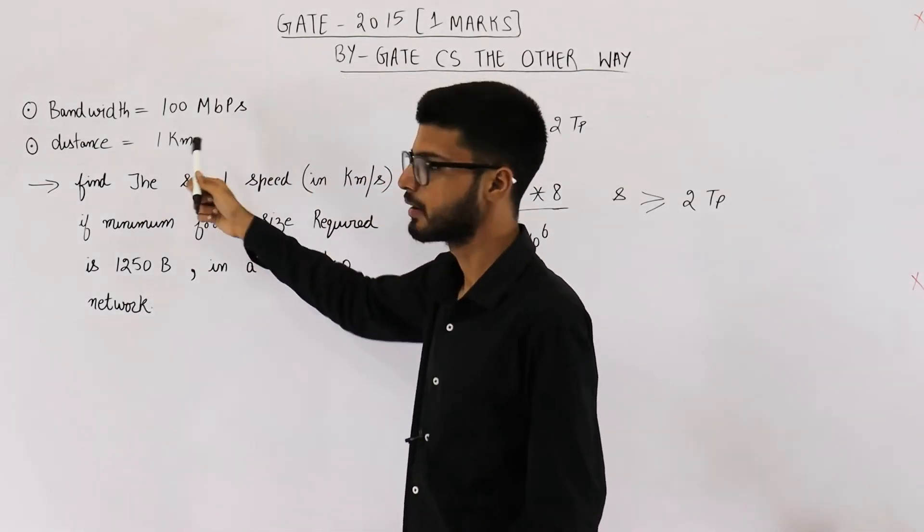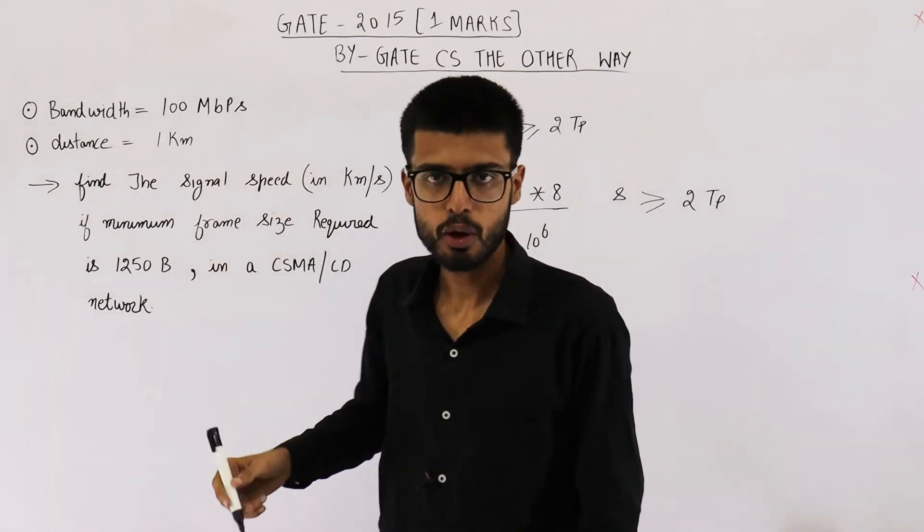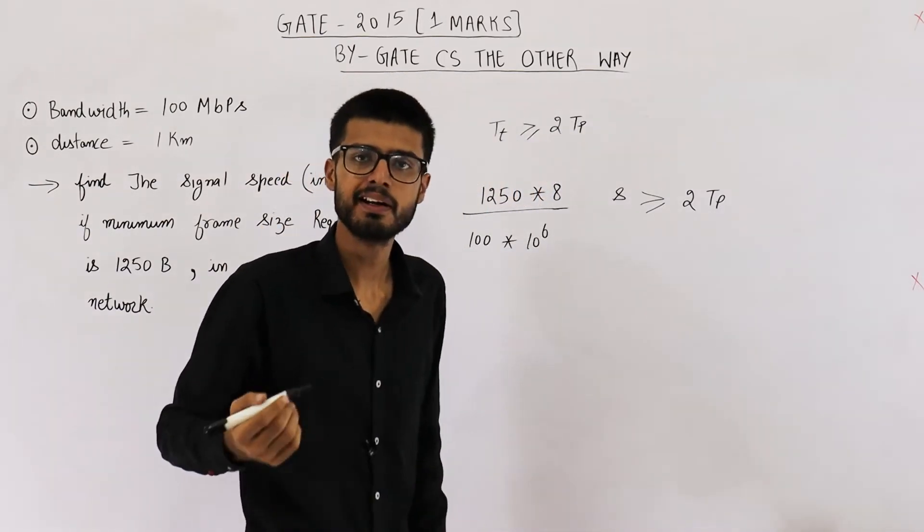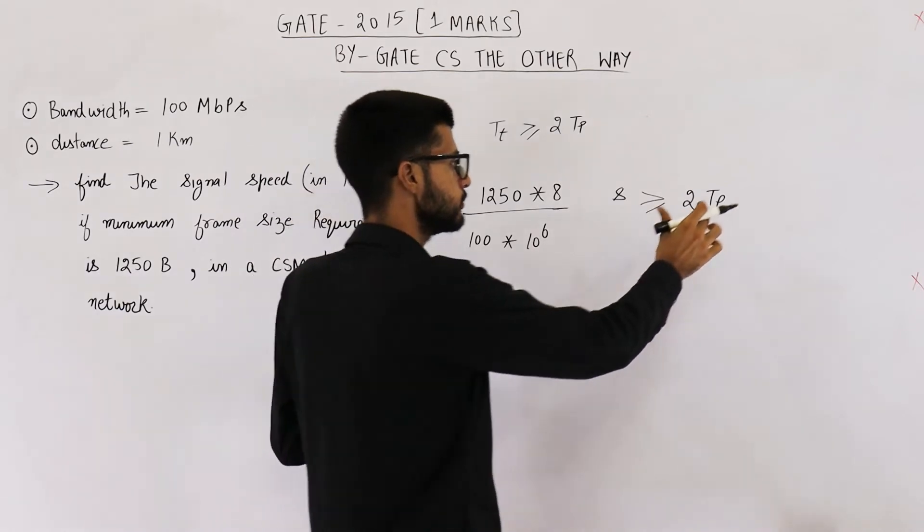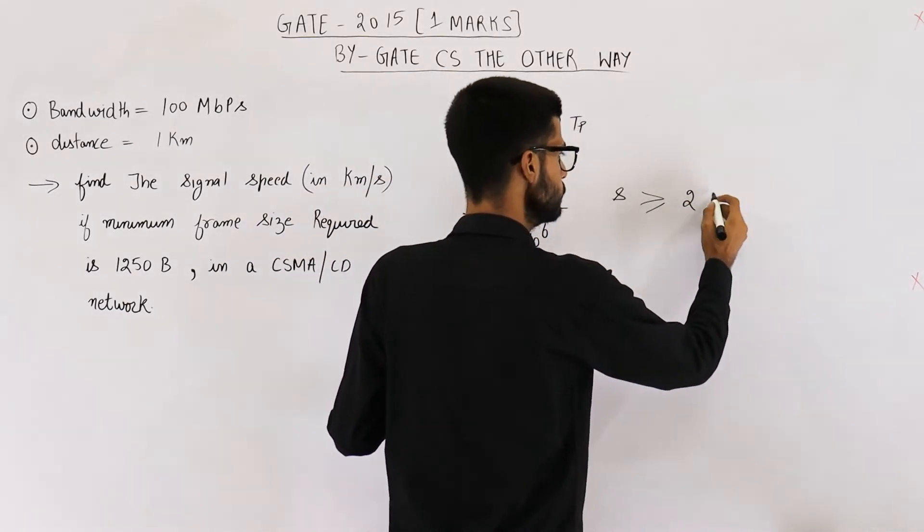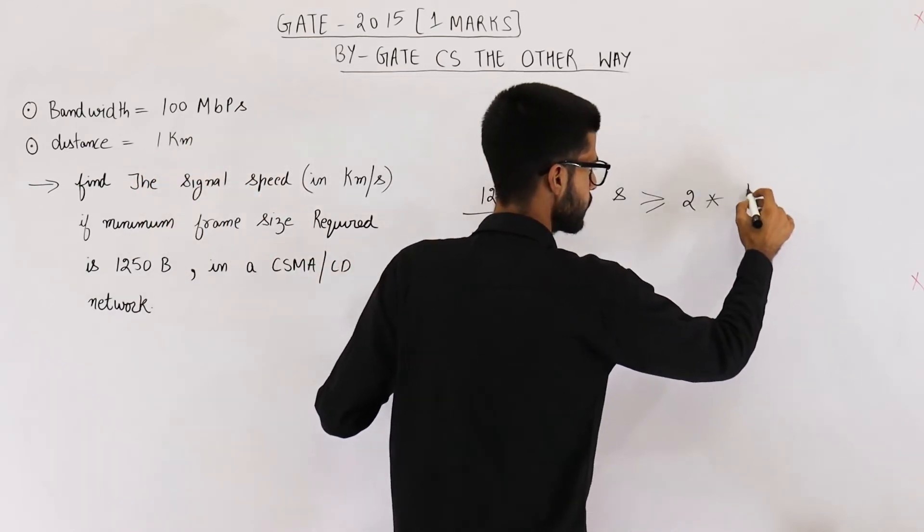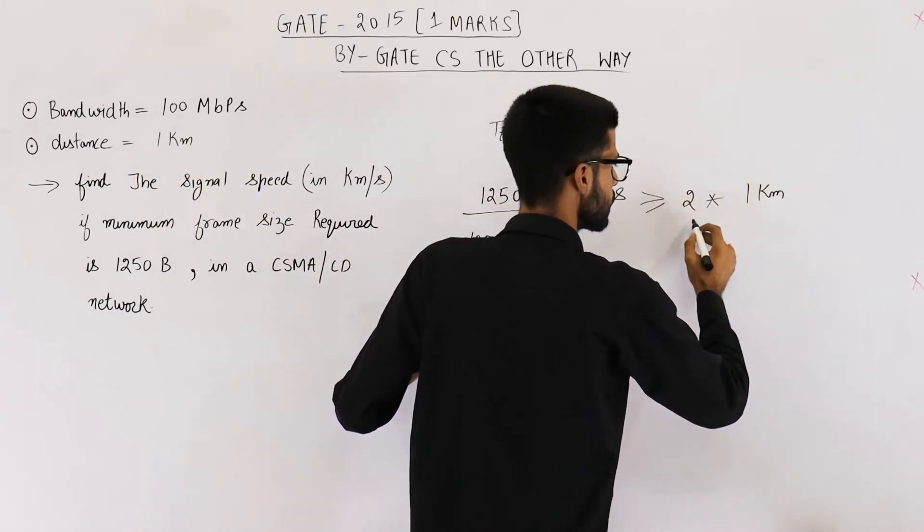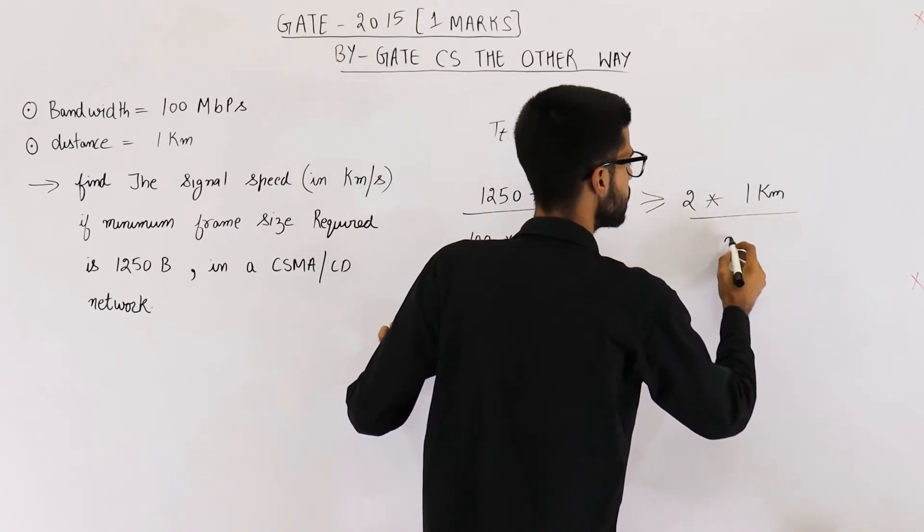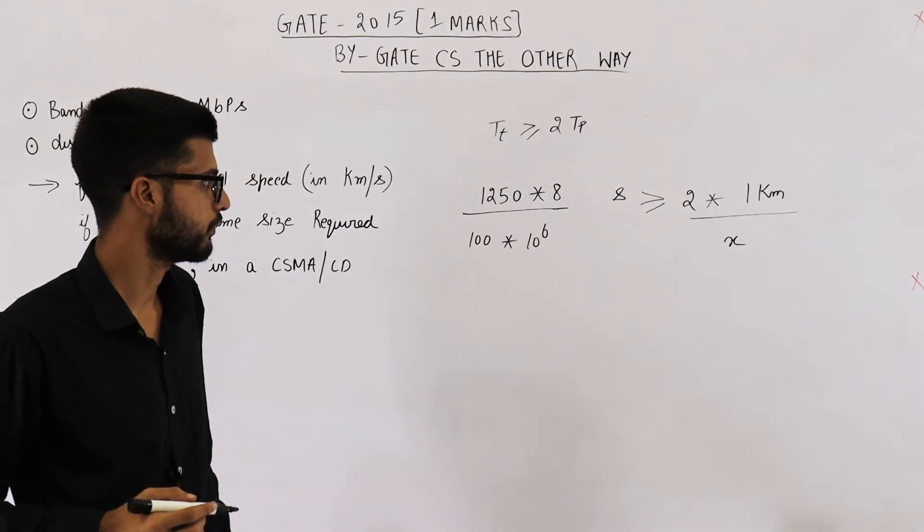TP is defined as distance between the nodes divided by signal speed. So, from this relation, you can easily find out the signal speed. Distance between the two nodes is one kilometer divided by the signal speed. Say signal speed is X. We want to find out the value of X.